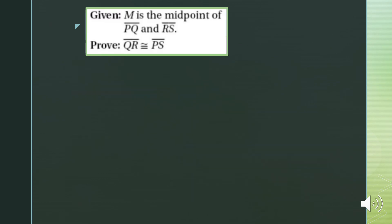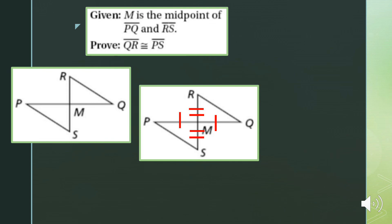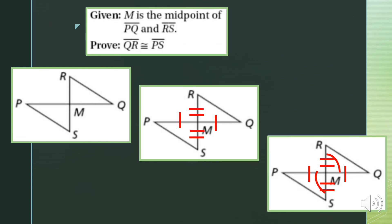Problem number six. M is the midpoint of line segment PQ and line segment RS. This means line segment PM is congruent to line segment MQ, and line segment RM is congruent to line segment MS. We need to prove that line segment QR is congruent to line segment PS. We can prove this if we can prove the two triangles are congruent. Since we have two corresponding parts, we add a third using the vertical angles.